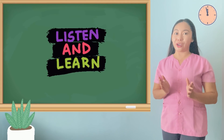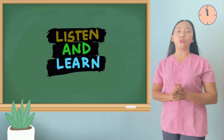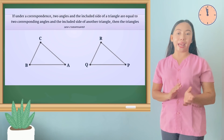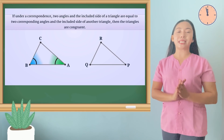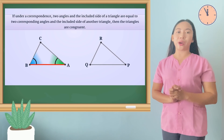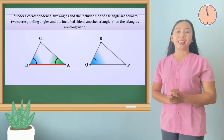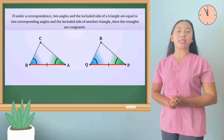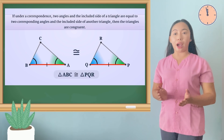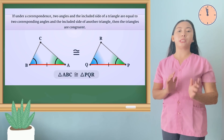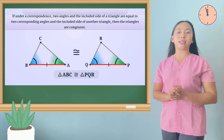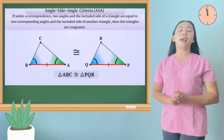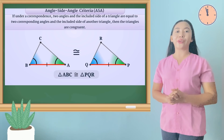At this point, we will discuss another congruence postulate, which is the ASA or angle-side-angle congruence postulate. It says that if two angles and the included side of a triangle are equal to two corresponding angles and the included side of another triangle, then the triangles are congruent.